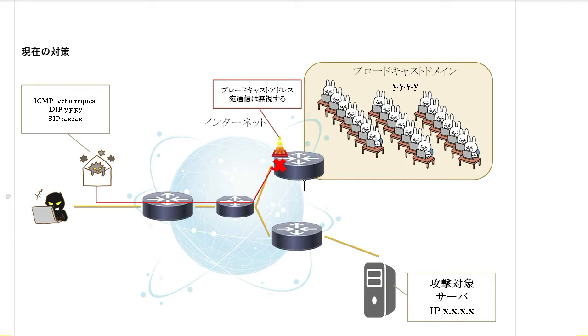ここまでお話を聞いていただければ、最初にお話しした守る手段の話もイメージしやすいと思います。現在の対策としては、ルーターでブロードキャストアドレス宛ての通信を無視する設定がデフォルトで入っていますので、悪意のある攻撃者が攻撃対象のサーバーのIPアドレスをソースIPに入れて偽装し、ブロードキャストアドレス宛てに通信してきたとしても、この段階でパケットを削除・ドロップすることができるので、スマーフ攻撃の対策になります。